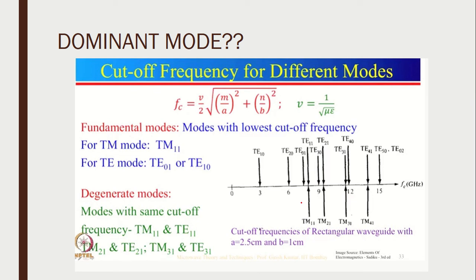A dominant mode is taken from the propagating modes of TE and TM waves — it is the mode with the lowest cutoff frequency. The basic propagating mode in TM was TM11, where some field components are present. In TE mode, the basic propagating modes are TE01 or TE10, and these are called the dominant modes of the TE wave. TM11 is the dominant mode for TM, and TE01 or TE10 is the dominant mode for TE. This can be verified by substituting values in the cutoff frequency formula.